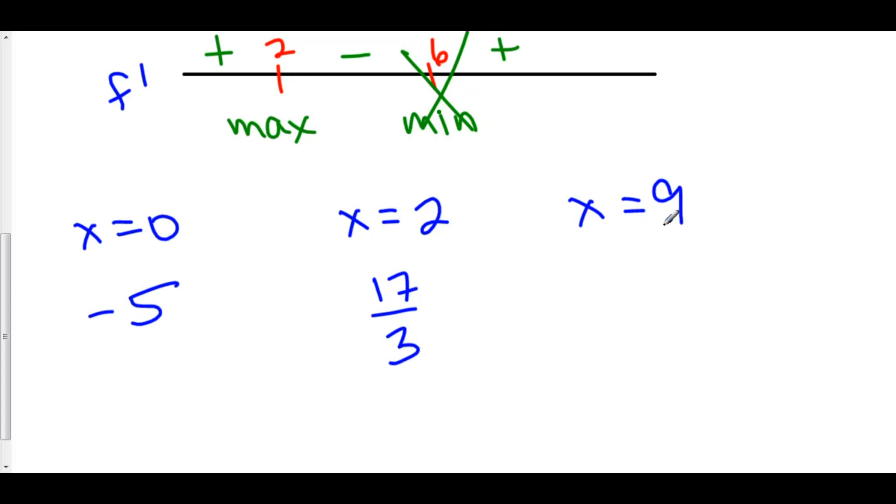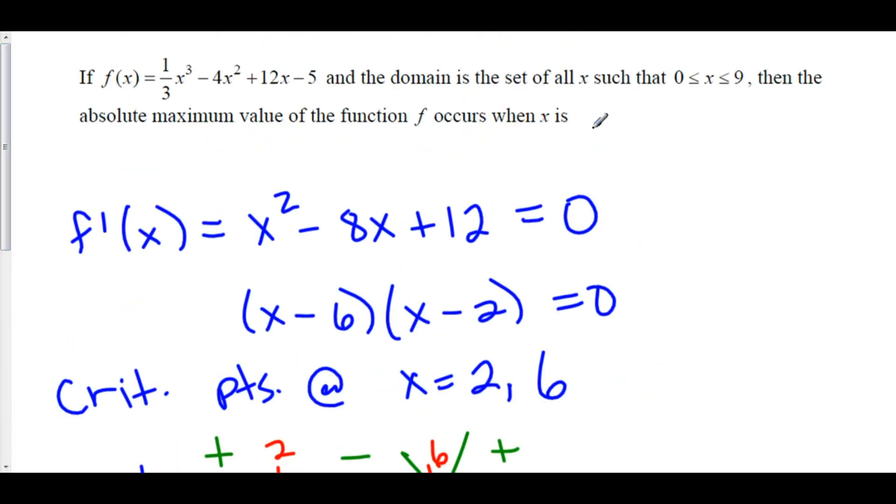And if you plug in x = 9, you get 22. But the question is, which one is the absolute max? And the answer is, the absolute max occurs at x = 9, because 22 is bigger than both -5 and 17/3. So the answer is that x is 9.